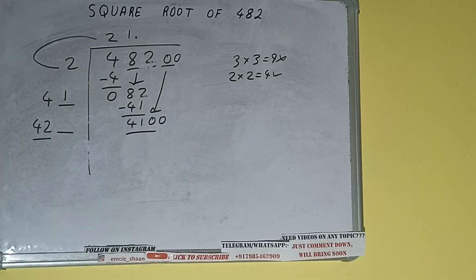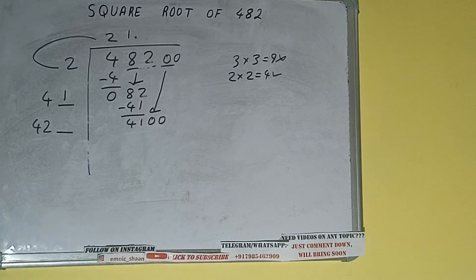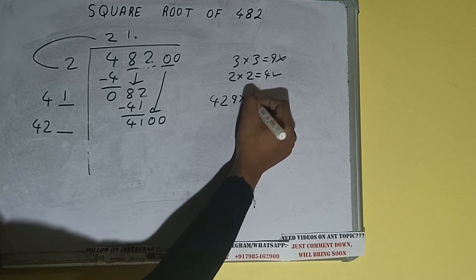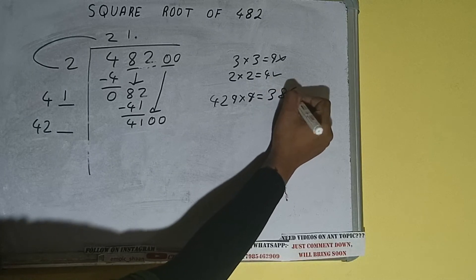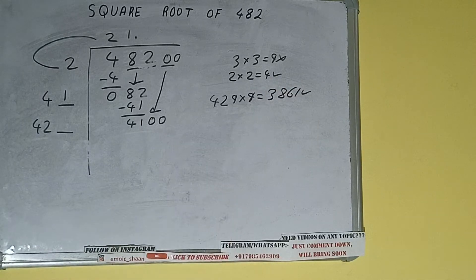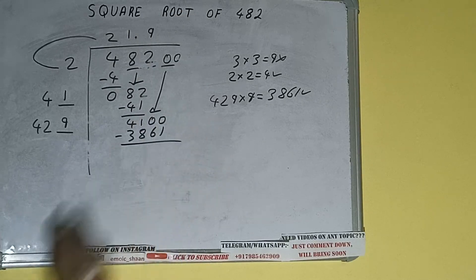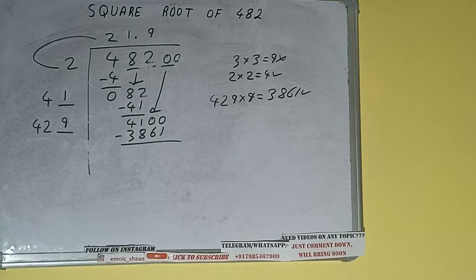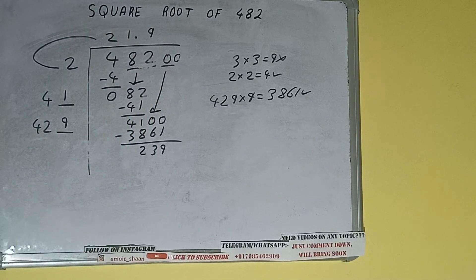Compare 42 and 410: 42 times 9 is 378, so we can try 9 times. 429 into 9 — we'll be having 3861, which is good to take. So 9 here and 9 here: 3861 subtract, and we'll be having 239. 429 plus 9 will be 438, and one digit extra.